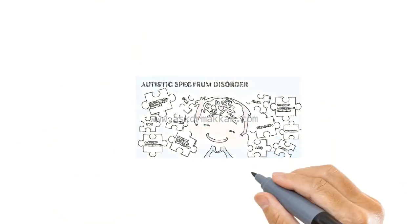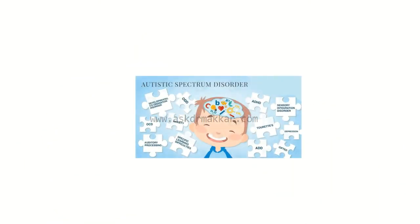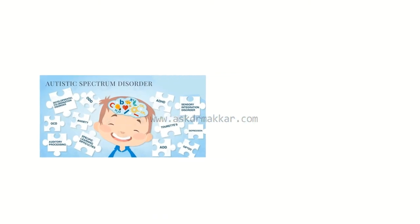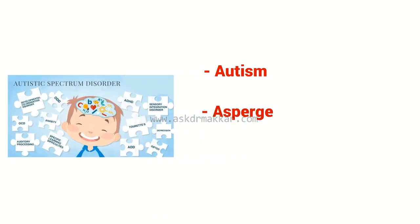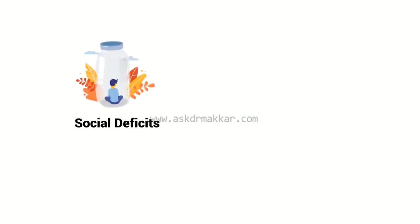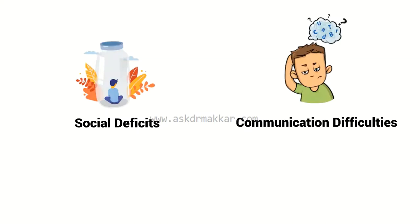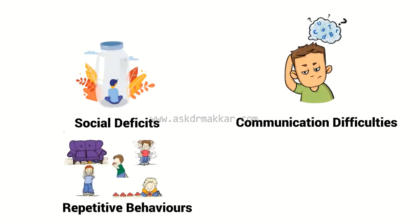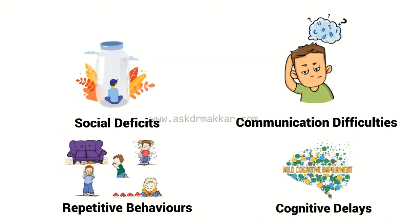The autism spectrum disorder describes a range of conditions classified as pervasive developmental. ASD includes autism, Asperger's Syndrome, and Pervasive Developmental Disorder Not Otherwise Specified (PDD-NOS). These disorders are characterized by social deficits, communication difficulties, stereotyped or repetitive behaviors and interests, and in some cases, cognitive delays.